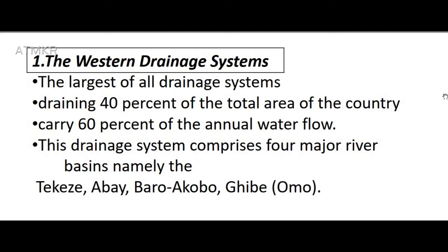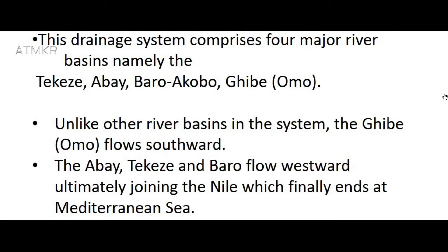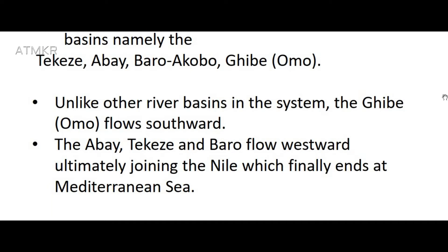The western drainage system is the largest of all drainage systems, draining 40% of the total area of the country and carrying 60% of the annual water flow. It comprises four major river basins: Tekeze, Abbae, Barro/Akobo, and Gibe/Omo. Unlike other river basins in the system, the Gibe/Omo flows southward, while Abbae, Takiz, and Barro flow westward, ultimately joining the Nile, which finally ends at the Mediterranean Sea.